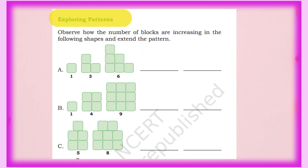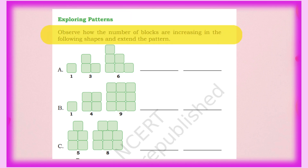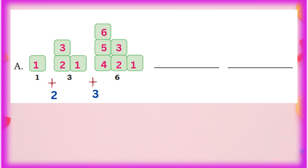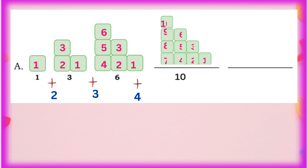Next part: Exploring Patterns. We observe how the number of blocks increases in the following shapes and extend the pattern. First sequence: 1 box, then 3 boxes, then 6 boxes. The pattern is adding 2, then 3. So: 1 plus 2 equals 3, 3 plus 3 equals 6, 6 plus 4 equals 10, 10 plus 5 equals 15. We draw 10 boxes and then 15 boxes.